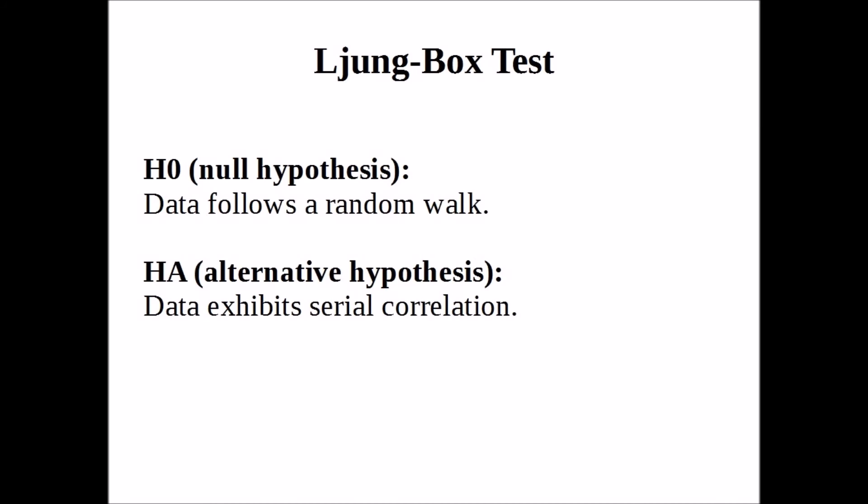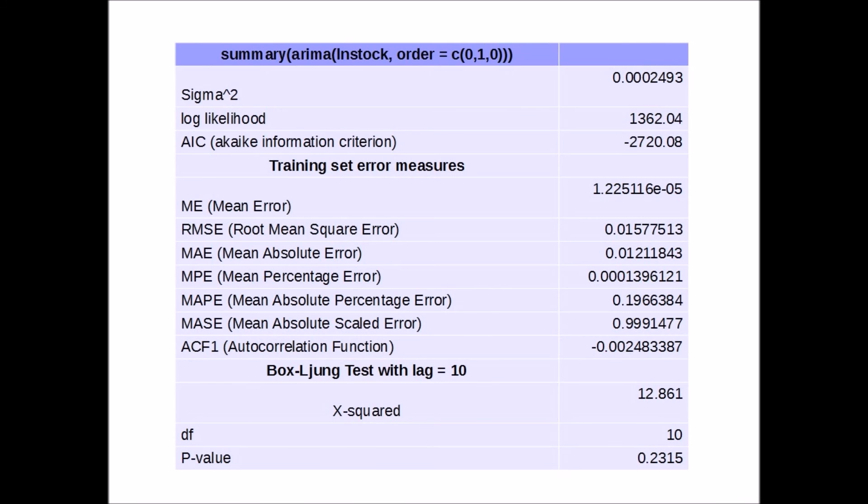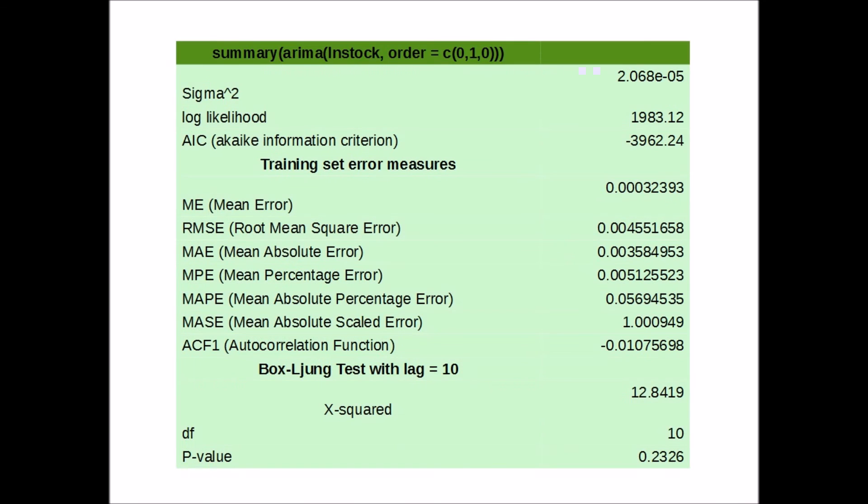Now to supplement the ARIMA model, we are also going to test the residuals of our ARIMA model using the Ljung-Box test. Essentially, we wish to further test our data to see if it follows a random walk or exhibits serial correlation. And in both cases, when we run the test, we have a p-value of roughly 0.23. So we cannot reject the null hypothesis and the evidence is suggesting that our data is following a random walk. So these are our summary statistics for the first model and again for the second.